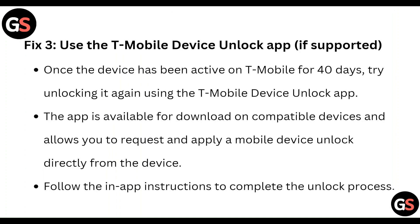Fix 3: Use the T-Mobile device unlock app if supported. Once the device has been active on T-Mobile for 40 days, try unlocking it again using the T-Mobile device unlock app. The app is available for download on compatible devices and allows you to request and apply a mobile device unlock directly from the device. Follow the in-app instructions to complete the unlock process.